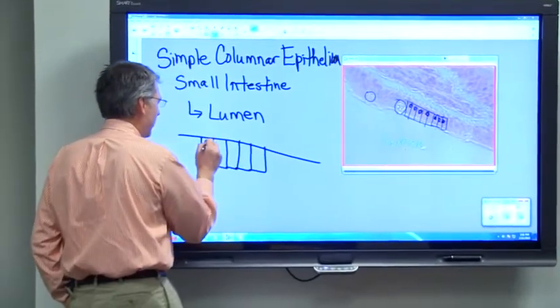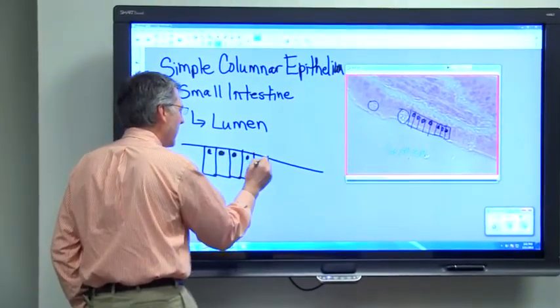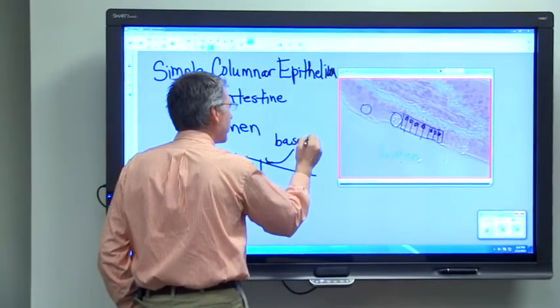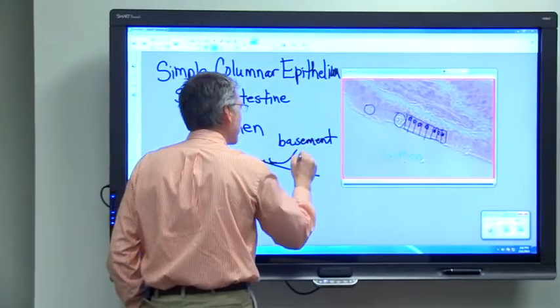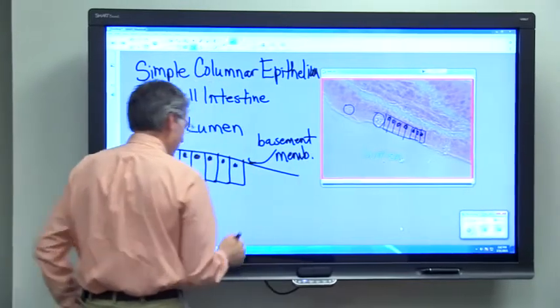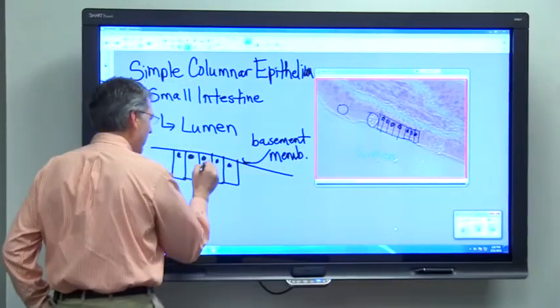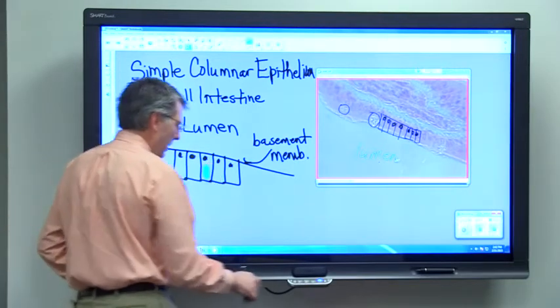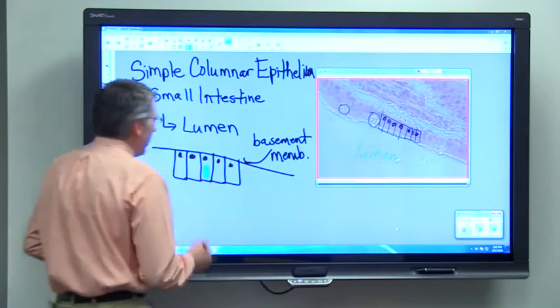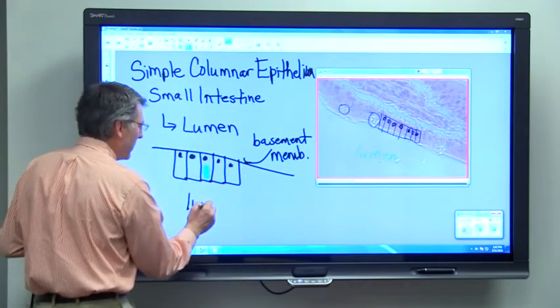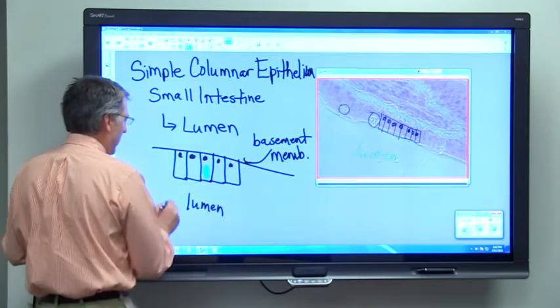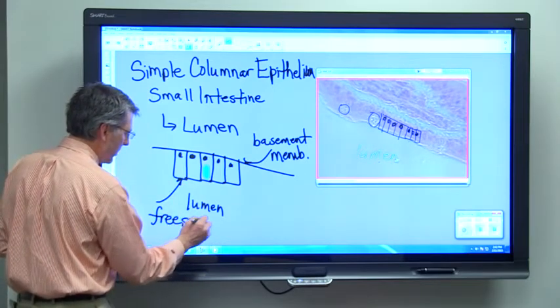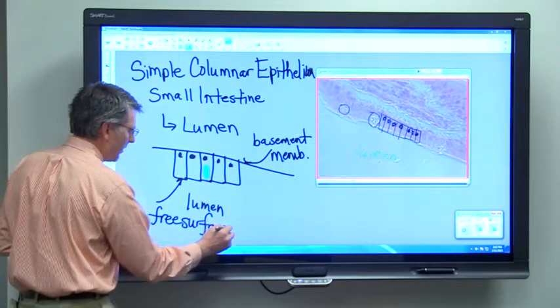We'll have nuclei all in the same level near the basement membrane. And then we'll have an occasional goblet cell. Now, this would be the lumen, so this is the free surface of the tissue.